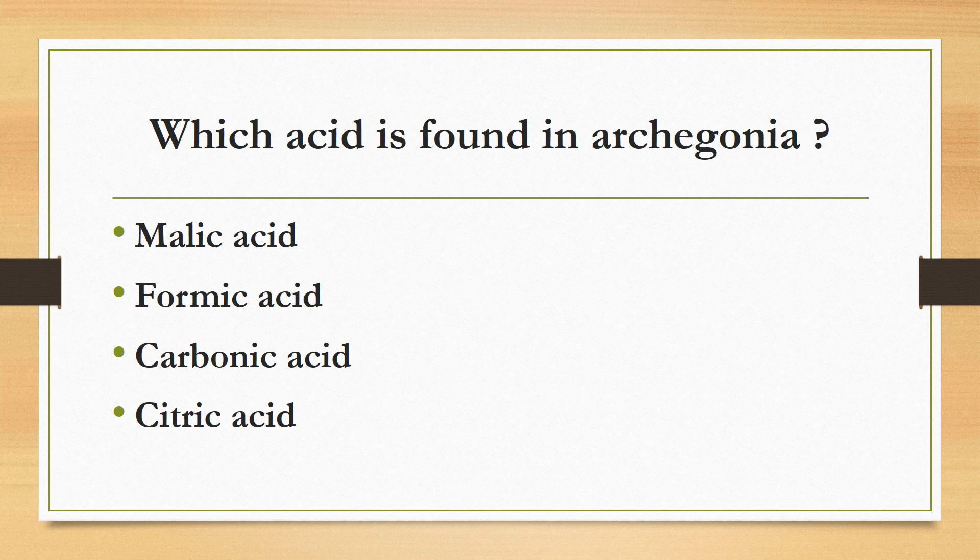Which acid is found in archegonia? Malic acid, formic acid, carbonic acid, or citric acid? The correct answer is malic acid. Malic acid is found in archegonia and helps in attracting antheridia.